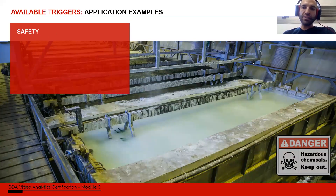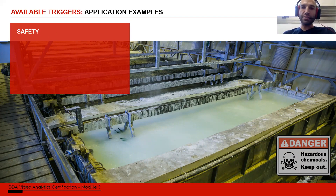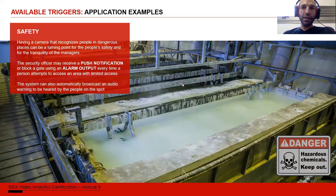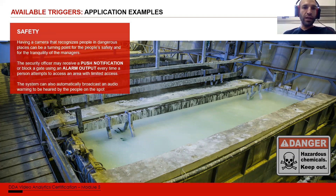For safety, we can set sterile areas on hazardous places — like toxic waste sites or train and tram rails where no person should be. We can set the rails as a sterile area with human detection. Whenever we recognize a person in the sterile area, we can use push notification and alarm output to activate a strobe light, lock the area, or broadcast an audio message audible to people on-site warning them they are entering a hazardous area.